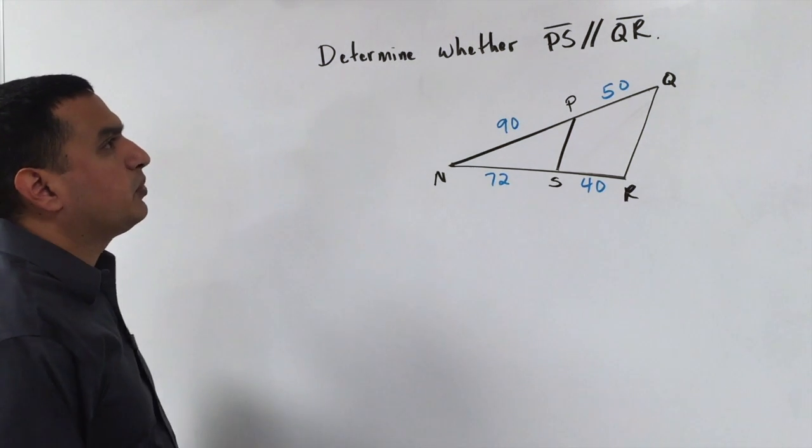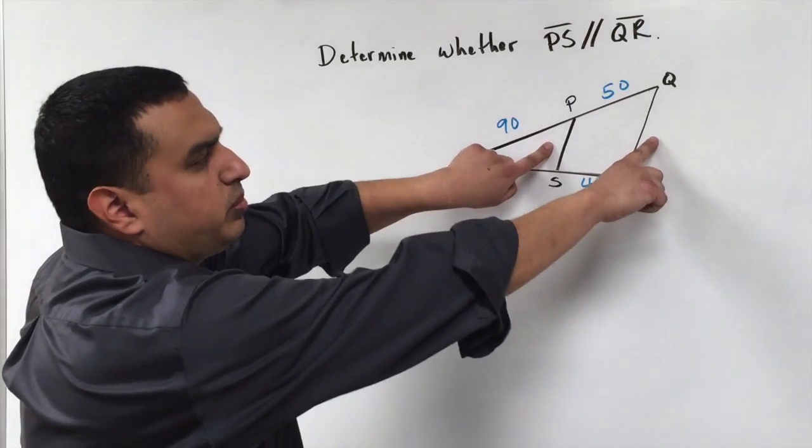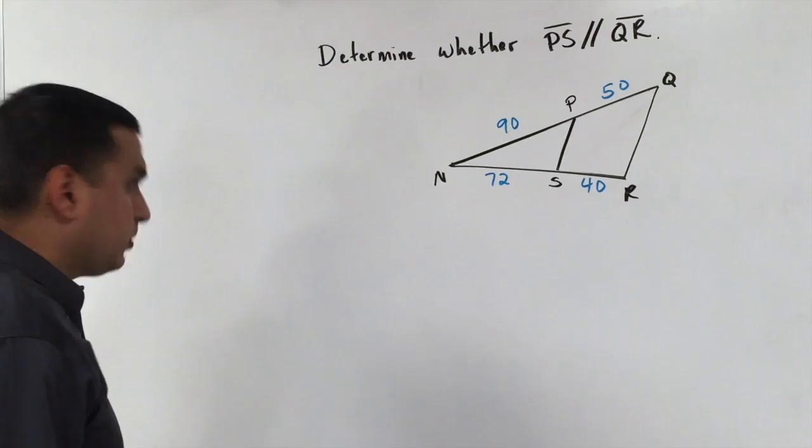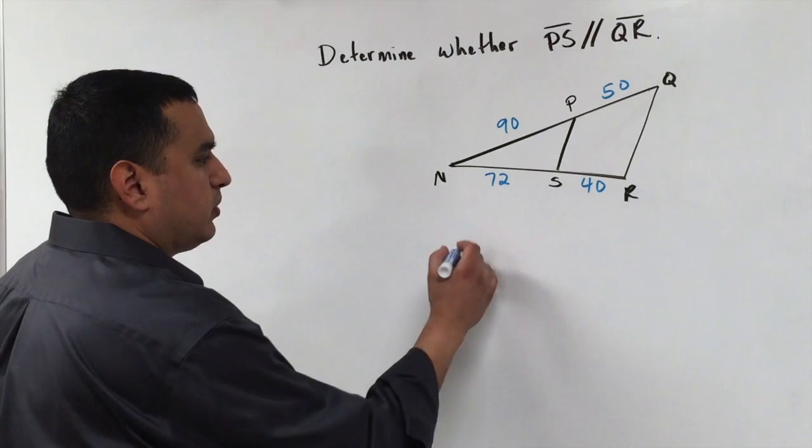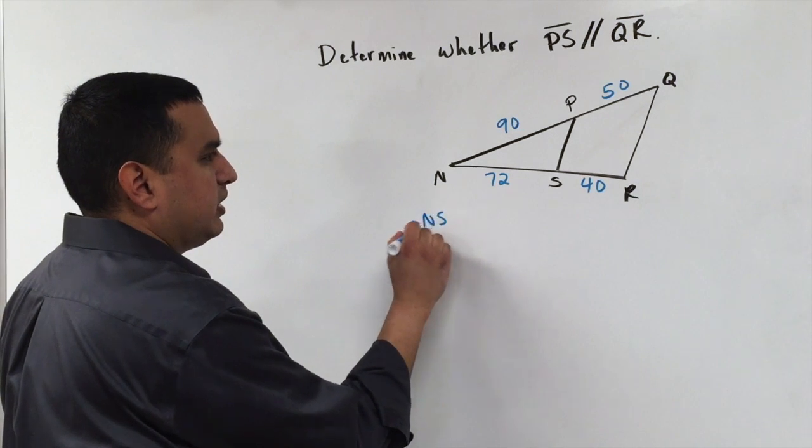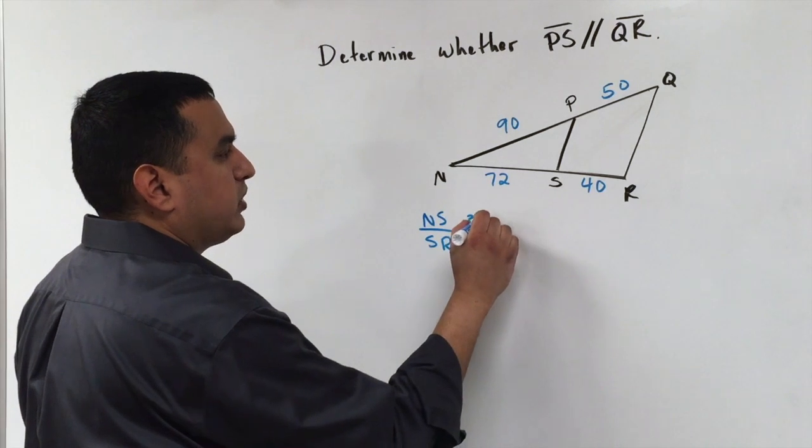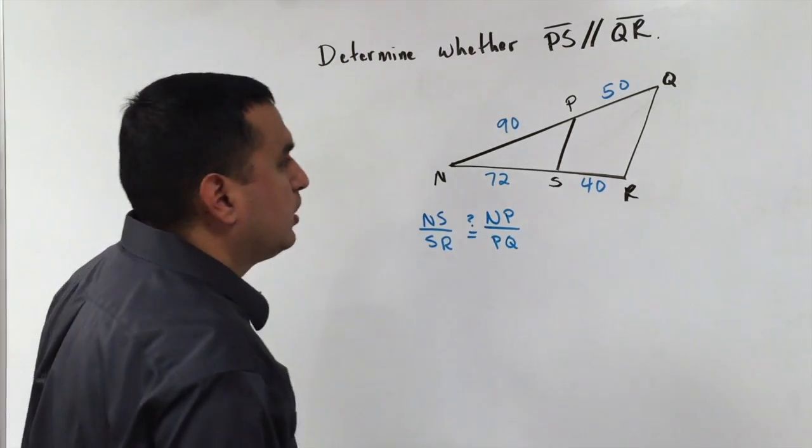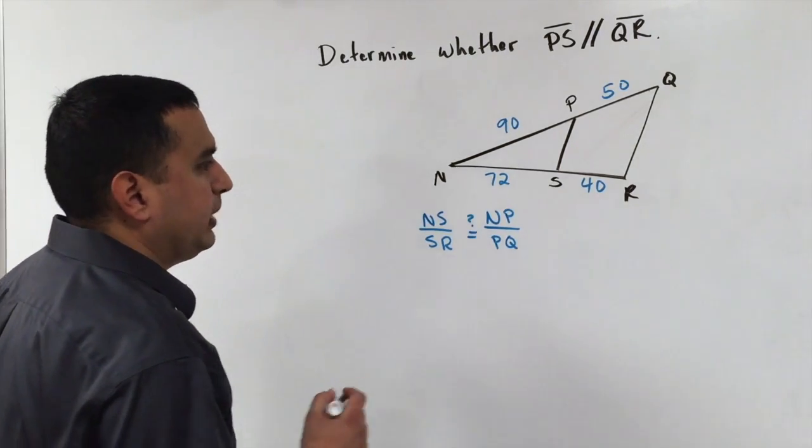For this example, what we're going to use is called the Converse of the Proportionality Theorem, which says I'm not told that these two segments are parallel. I want to decide if they're parallel. So what I'm going to do is set up these proportions and determine if I have a proportionality. So I'm going to look at is the ratio basically of NS over SR. I'm going to ask, is that equal to the ratio of NP over PQ? Are those two things congruent? So I'm using some math here.